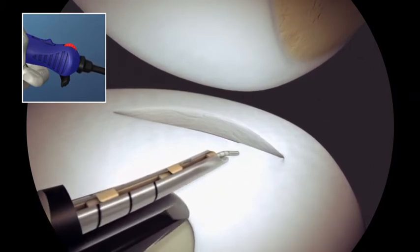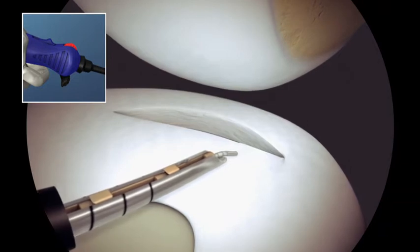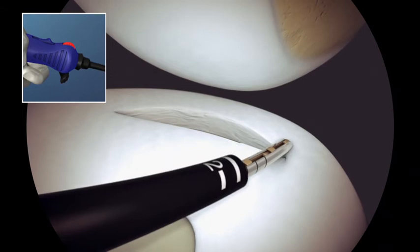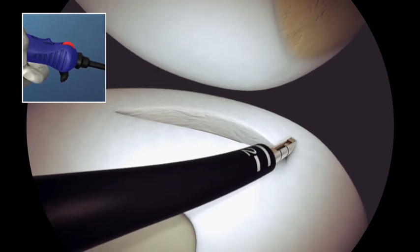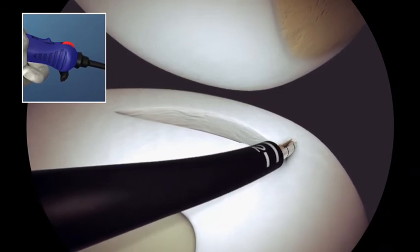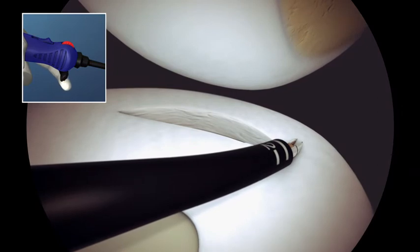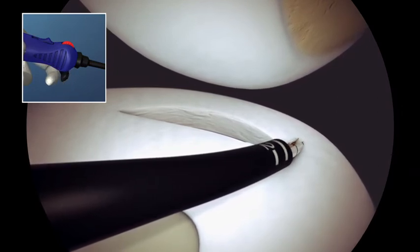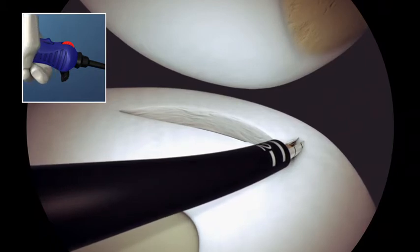Ensure that the switch is forward in the freewheel position and pierce through the meniscus. Use the needle markings to ensure the proper depth of penetration. To place the first implant, pull back and release the trigger to deploy an implant. Withdraw the needle from the meniscus.